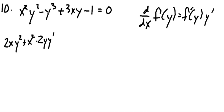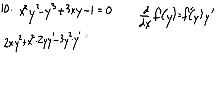Now I'm subtracting y cubed. The derivative of minus y cubed is minus 3y squared by the power rule, but again I have to multiply by the derivative of y, which is y prime. Then 3xy requires the product rule: the derivative of 3x is 3 times y, plus 3x times the derivative of y, which is just y prime.